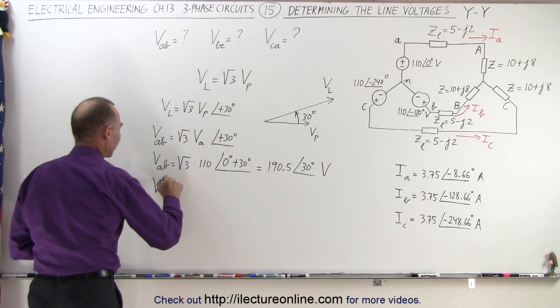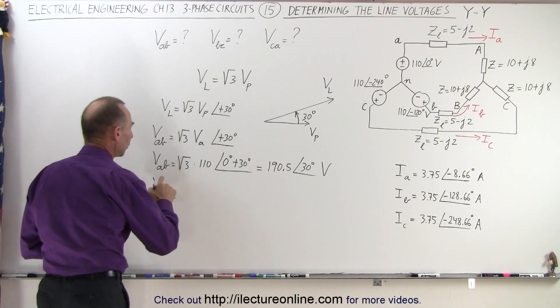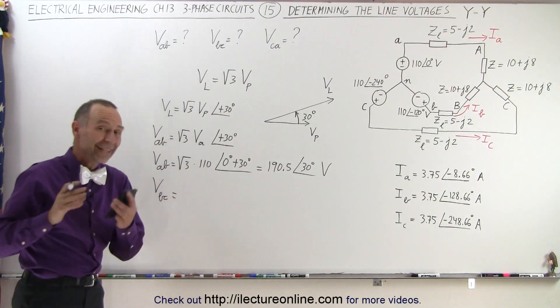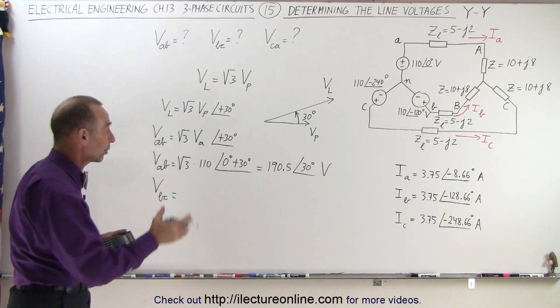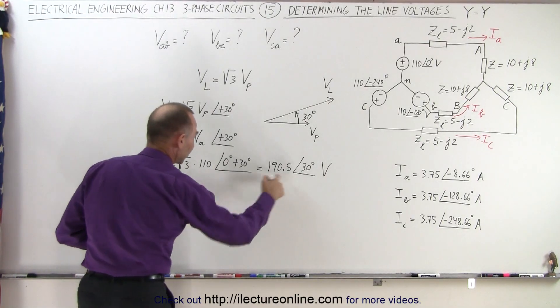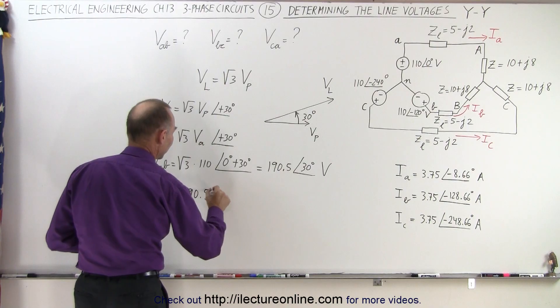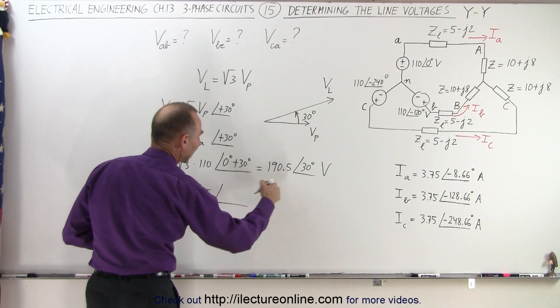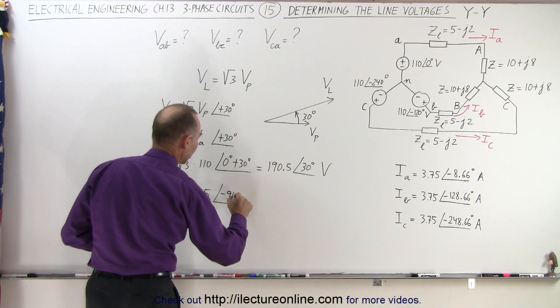Now to find VBC, we know that will be the same magnitude, but it will lag by 120 degrees. So we're going to subtract 120 degrees from that. So that gives us 190.5 volts with a phase angle of 30 minus 120, which is minus 90 degrees.